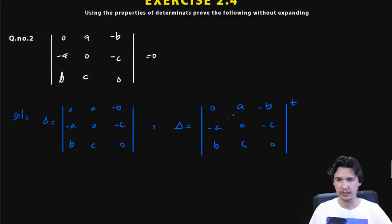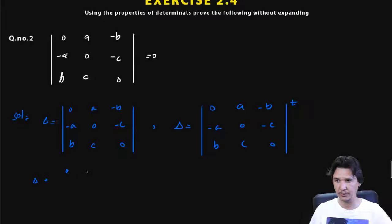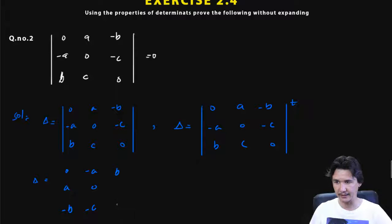After taking the transpose, the off-diagonal values exchange: b swaps with minus b, and c swaps with minus c, while the diagonal entries remain as they are. So the transpose gives us: 0, minus a, b in row one; a, 0, c in row two; and minus b, minus c, 0 in row three.